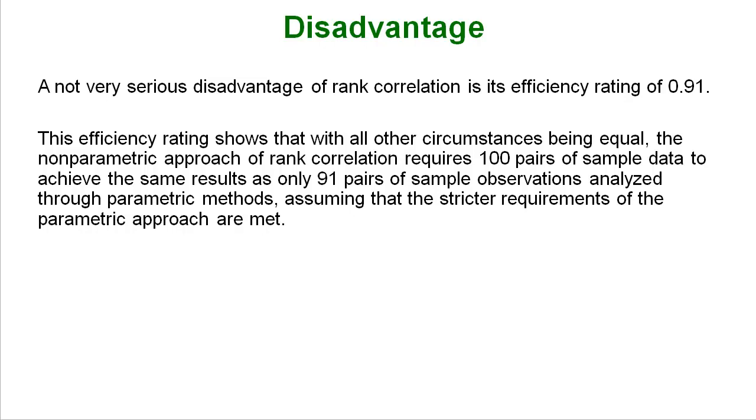The disadvantage is a very small disadvantage. Rank correlation has an efficiency rating of 0.91. An efficiency rating is basically a way of comparing one test to another. So if all other circumstances are equal the nonparametric approach of doing rank correlation would require 100 pairs of sample data to achieve the same level of accuracy as only 91 pairs of sample data would be through normal parametric methods.